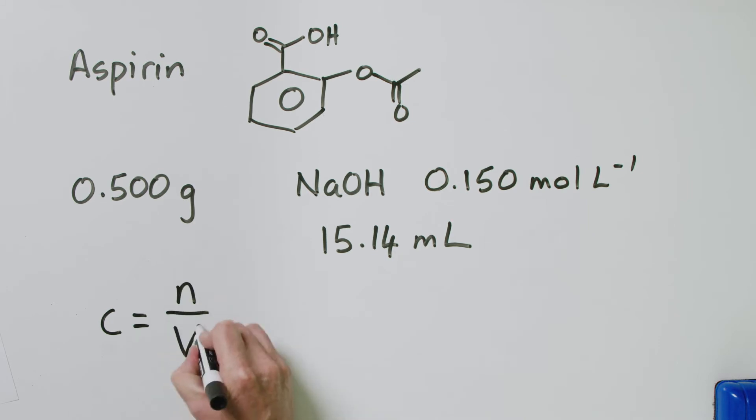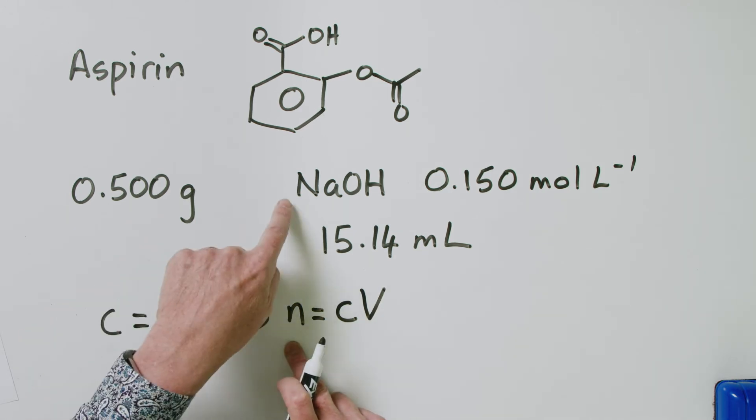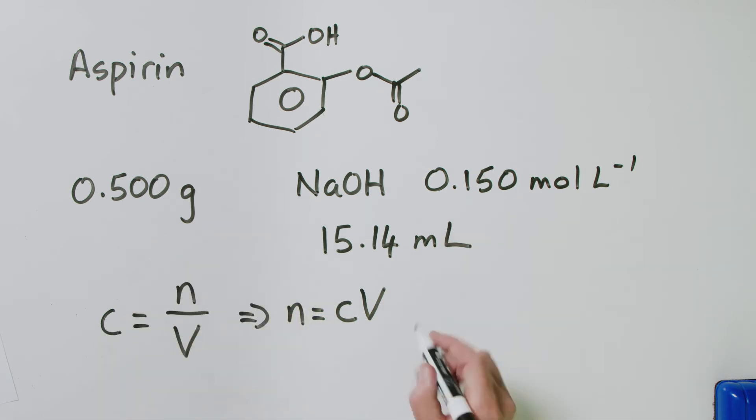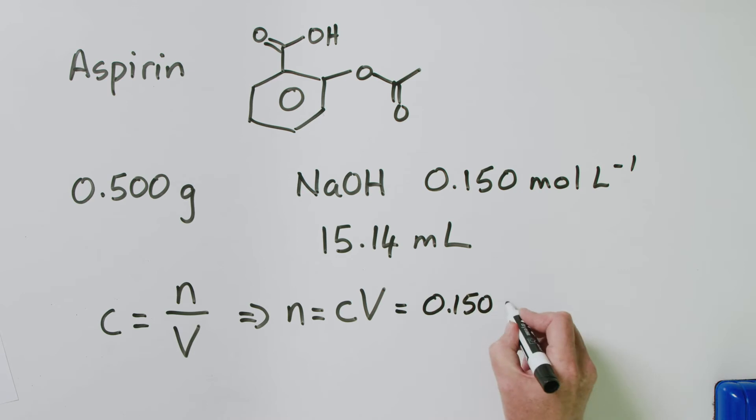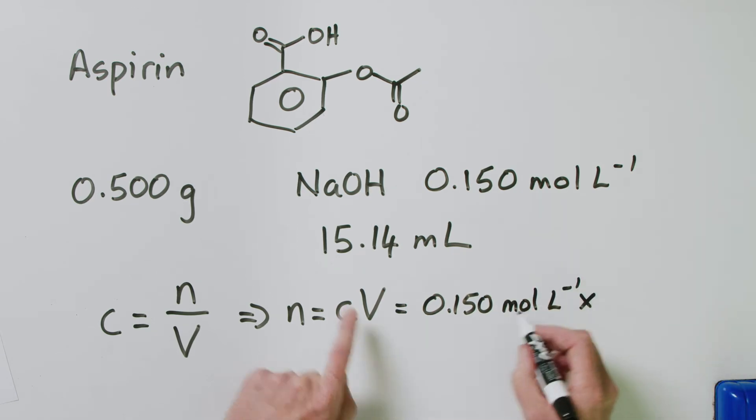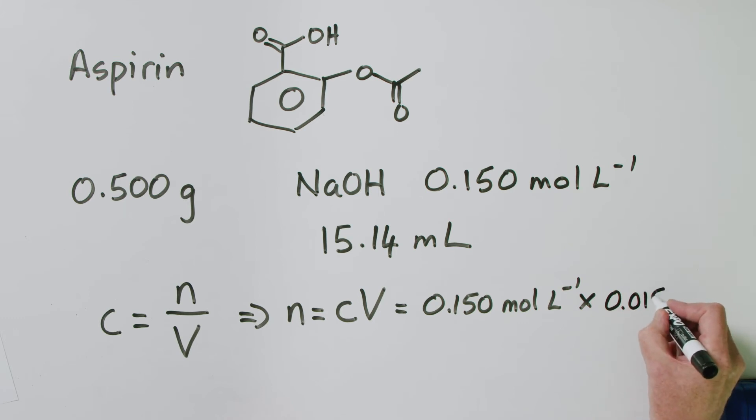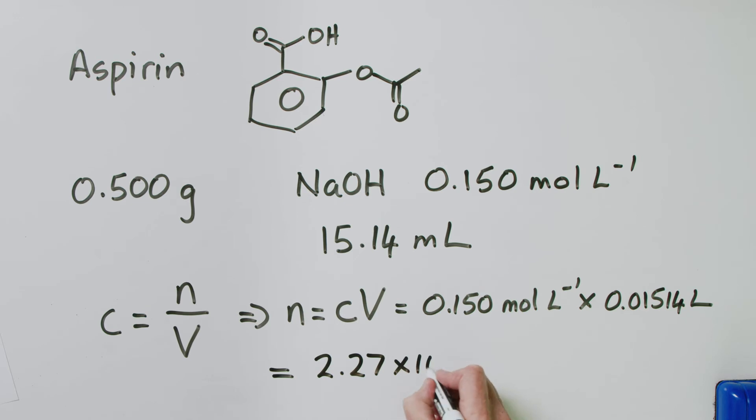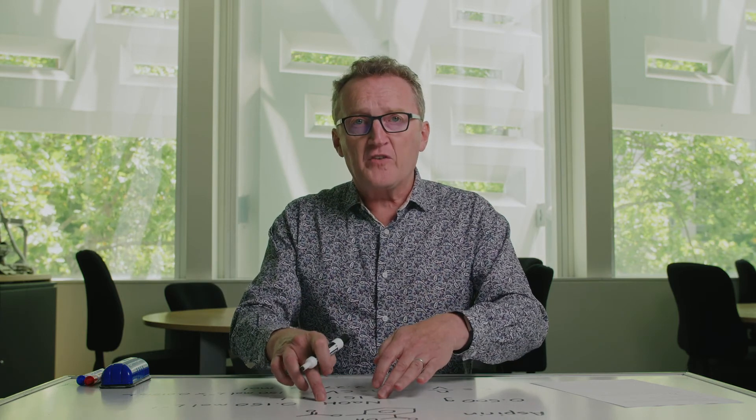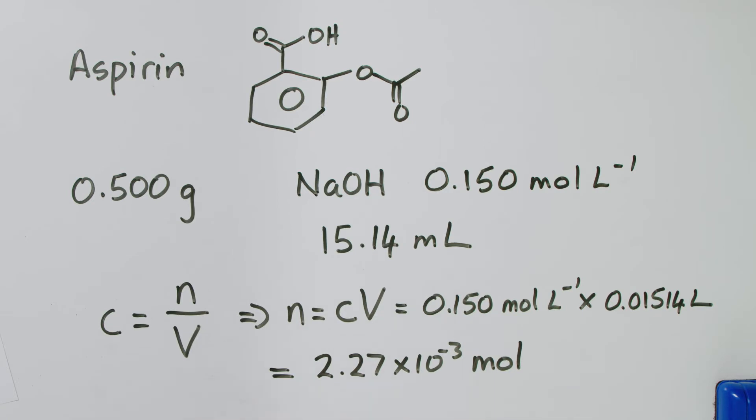C equals N over V. So therefore, N is CV. N in this case is the number of moles of sodium hydroxide that we use in our titration. So that is equal to 0.150 mole per liter multiplied by the volume. This is in milliliters. Remember, we want it in liters. So that is 0.01514 liters. And when we do that calculation, we find the number of moles of aspirin is 2.27 times 10 to the minus 3 mole. So what that's saying is that in order for our sodium hydroxide to react completely with our aspirin, we need 2.27 by 10 to the minus 3 moles of it.